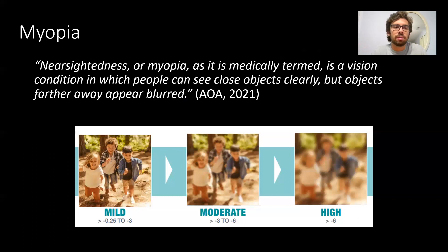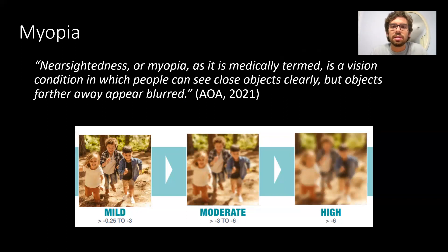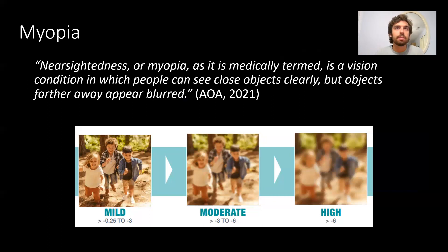So what were some of my main questions? Myopia is nearsightedness — it means you see things close that are kind of blurry. From the American Ophthalmology Association: nearsightedness, or myopia as it is medically termed, is a vision condition in which people can see close objects clearly, but objects farther away appear blurred. Myopia means you can take your glasses off — that's my case — but things farther away, you have trouble seeing.